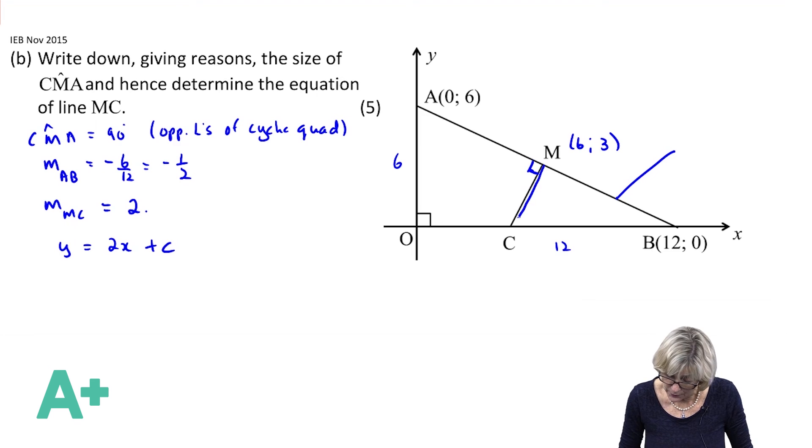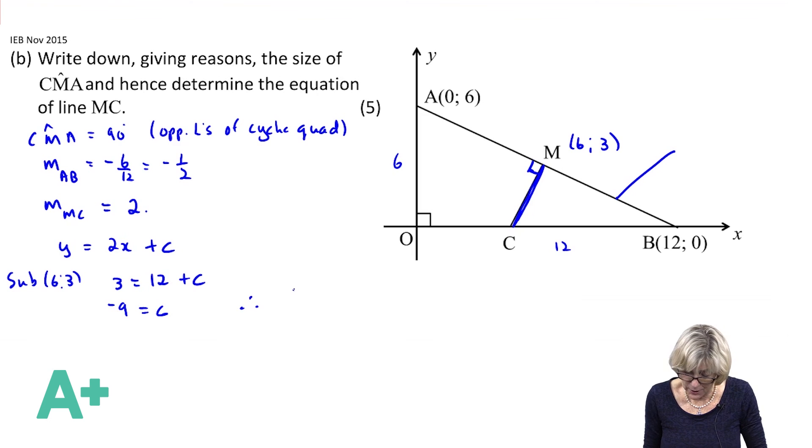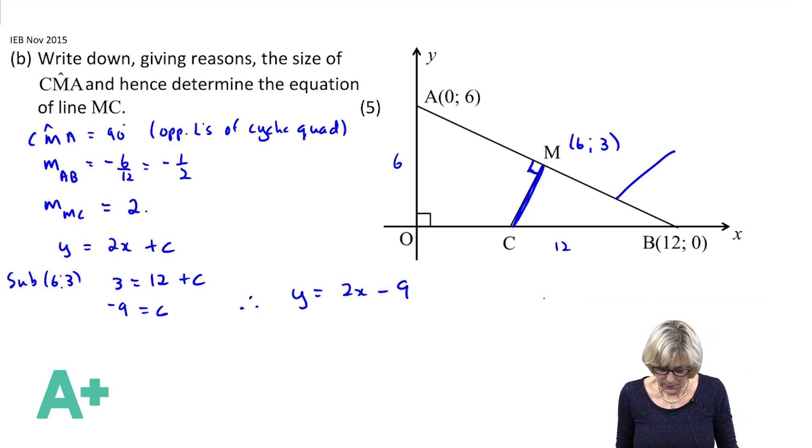Now we just need to substitute a point that lies on the line MC, and the point is (6,3). So I'm going to sub (6,3): we're going to get 3 = 2(6) + c, which is 3 = 12 + c. Take the 12 across, I'm going to get 3 - 12 which is -9. Therefore I get the equation to be y = 2x - 9.